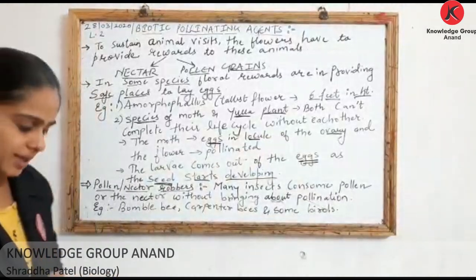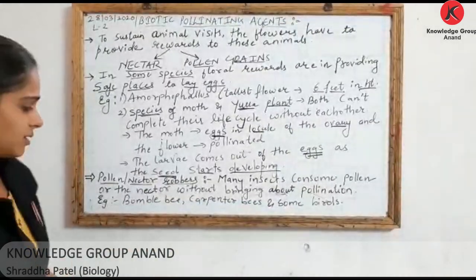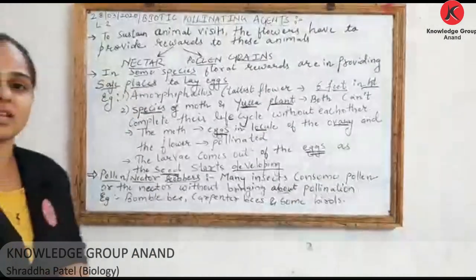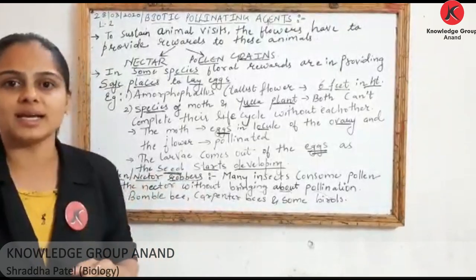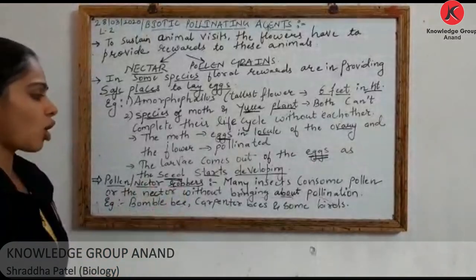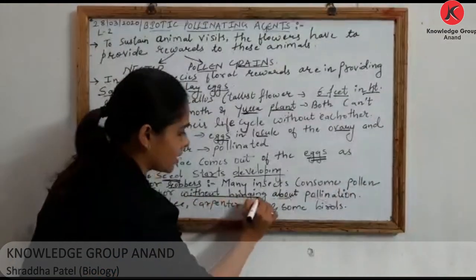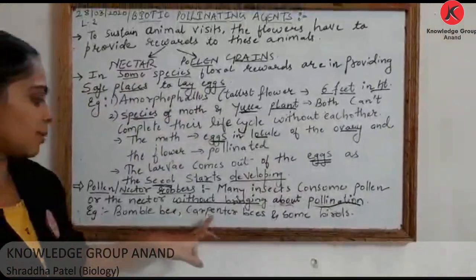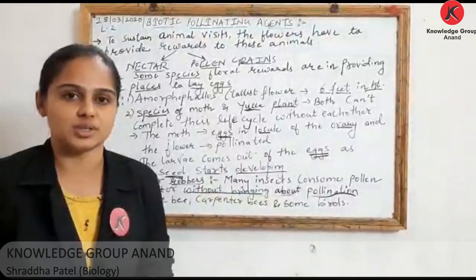Now there are certain organisms like bumble bees, carpenter bees, and some birds that consume pollen or nectar without bringing about pollination. These are called pollen or nectar robbers. They take the pollen and nectar but do not perform pollination. Examples: bumble bee, carpenter bee, and some birds. This concludes our discussion of biotic pollinating agents.